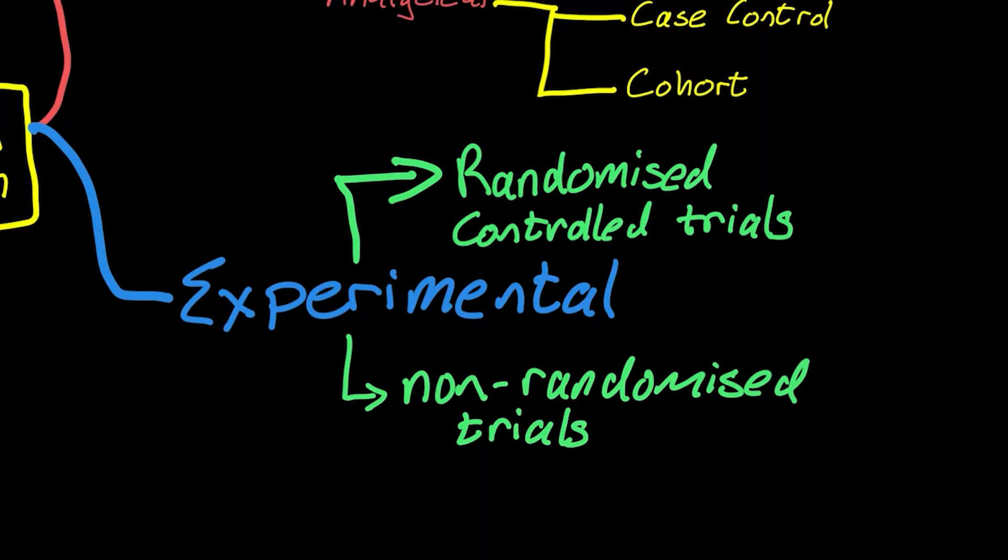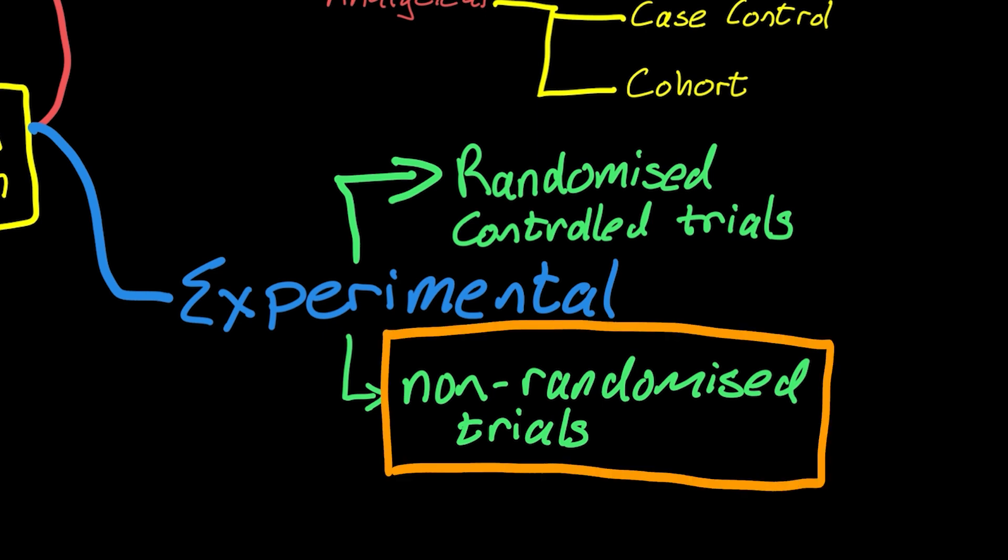I'm going to do a whole video on that in just a minute. If they aren't randomly assigned, less strong evidence, because we've got the problem of confounding. In my previous video and in future videos, I'll re-describe what we mean by confounding. Really, it's an alternative explanation where the exposure and the outcome are both associated with a third explanation. I'm not going to get into that right now.